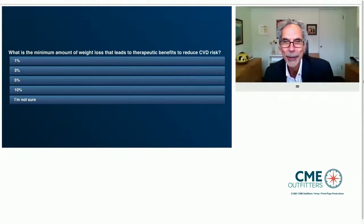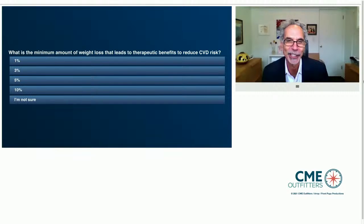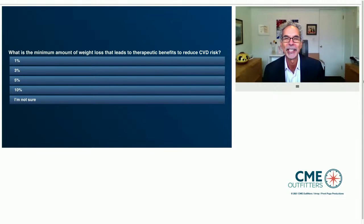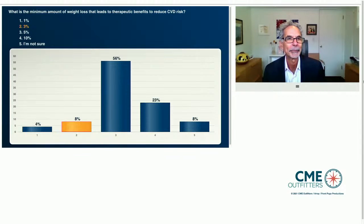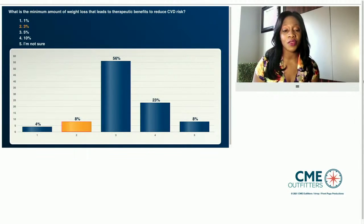Before we do that, let's ask our audience: what minimum amount of weight loss can lead to therapeutic benefits in cardiovascular disease risk factors such as diabetes, hypertension, or dyslipidemia? Is it one percent, three percent, five percent, ten percent, or you're not sure? Fifty-six percent of individuals said about three percent — and that is the correct answer — the minimum amount of weight loss that leads to benefits for cardiovascular disease.